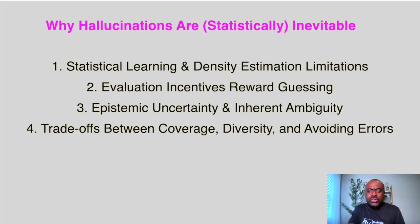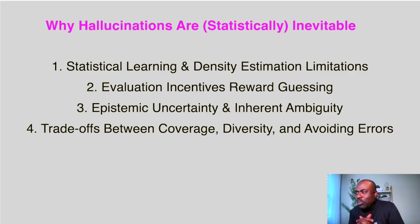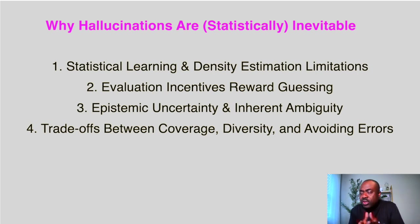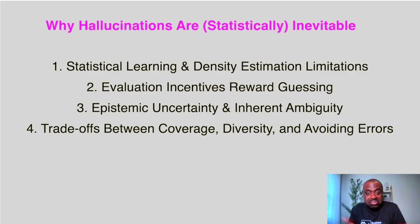Number four is the trade-off between model coverage, model diversity, and avoiding errors. If you restrict your model too much so that answers are very precise, your model becomes very conservative and will not respond to many situations — it won't be diverse, and its usefulness drops significantly. To make the model more diverse and useful, you have to relax some constraints and generate fuller responses, which increases the risk of factual errors.